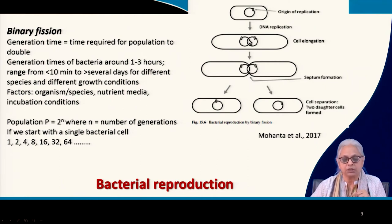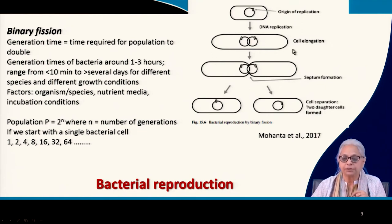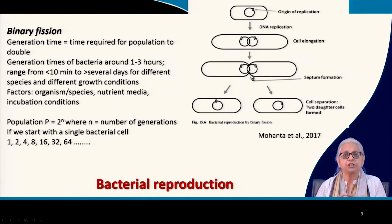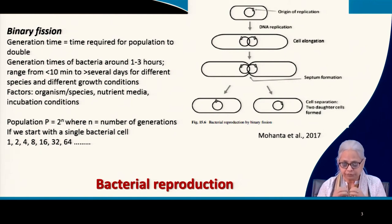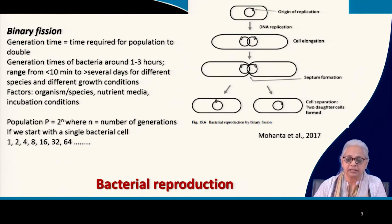There is an increase in the length of the cell and the DNA is replicated, so we now have 2 circular strands. When the cell elongates enough, a septum is formed at the centre, and eventually the septum leads to separation of the cell into 2 parts, each with its own double-stranded circular DNA.